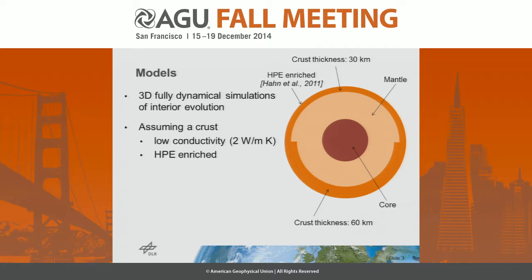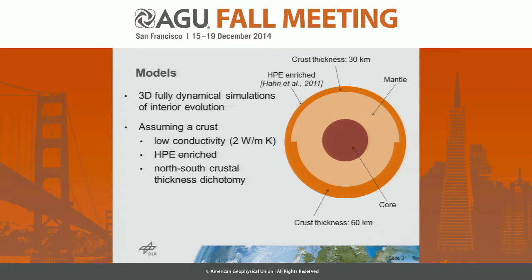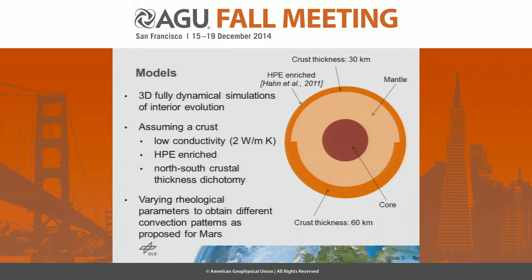The crust is also enriched in heat-producing elements, and we have taken the average values obtained from the GRS measurements, as shown in Han et al. 2011, distributing them homogeneously in the crust. We also account for a north-south crustal thickness dichotomy: a thicker crust in the south of about 60 kilometers and a thinner crust in the north of about 30 kilometers.